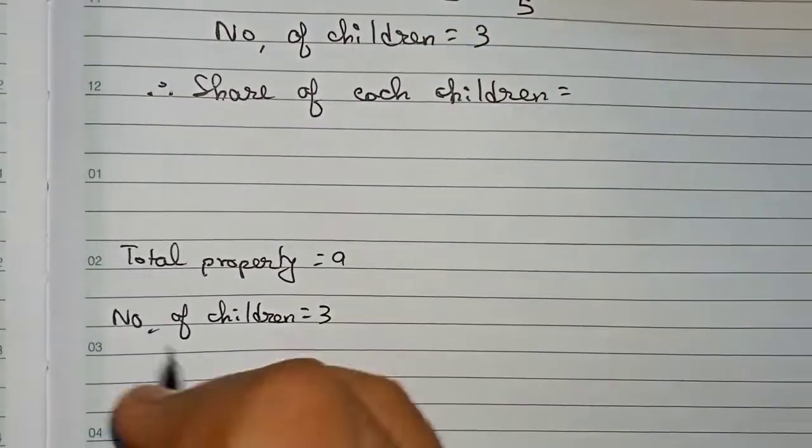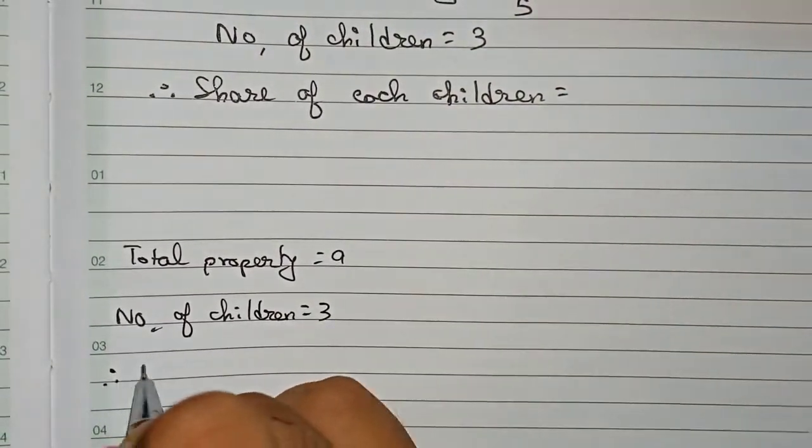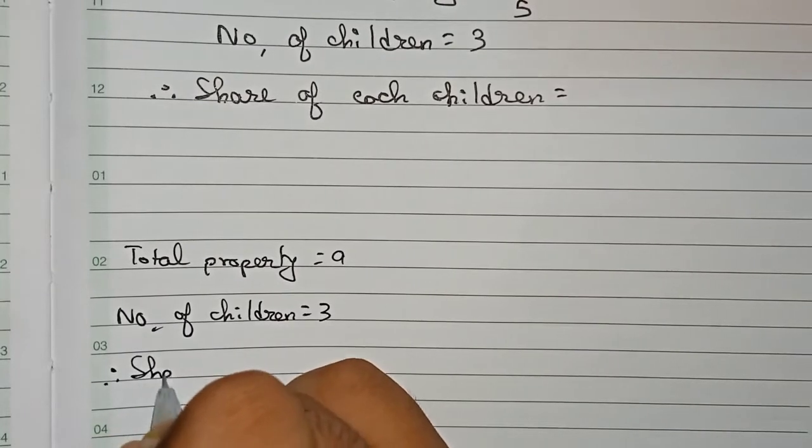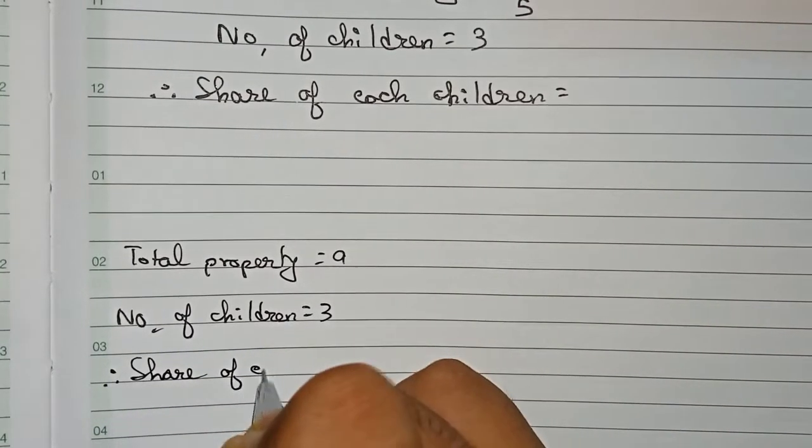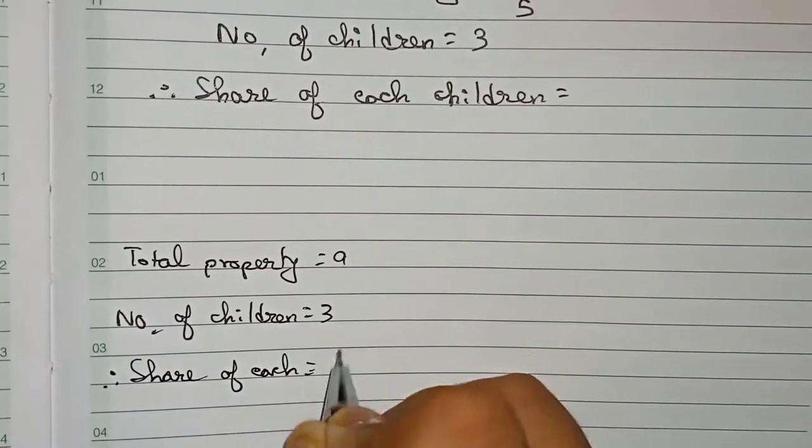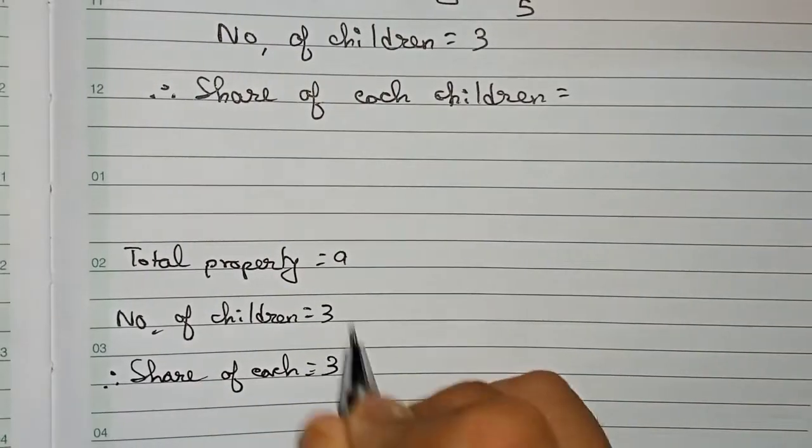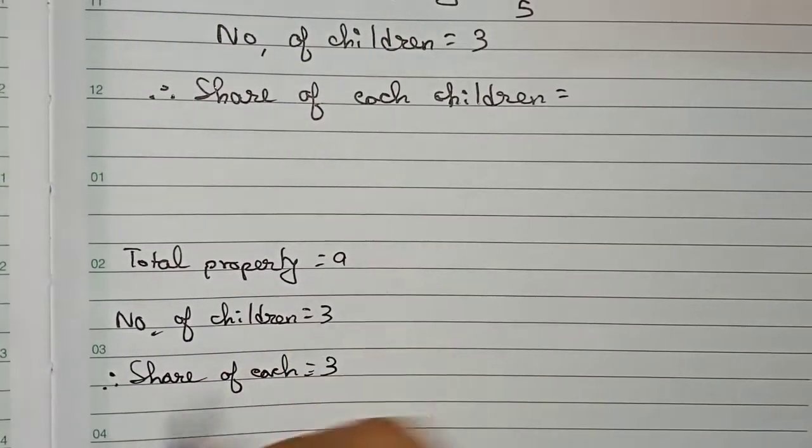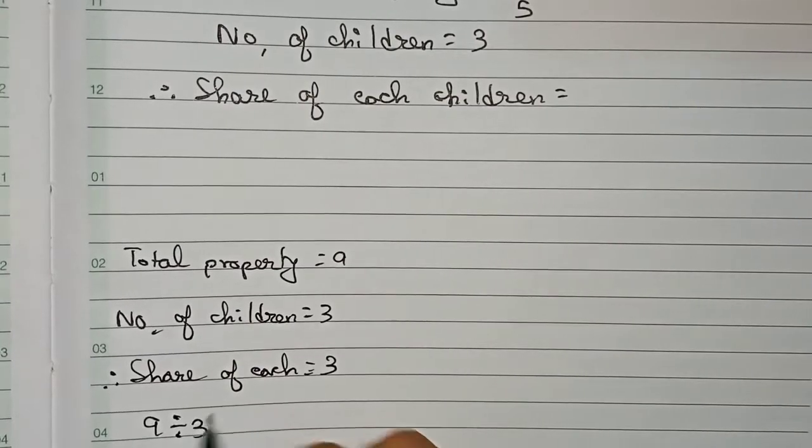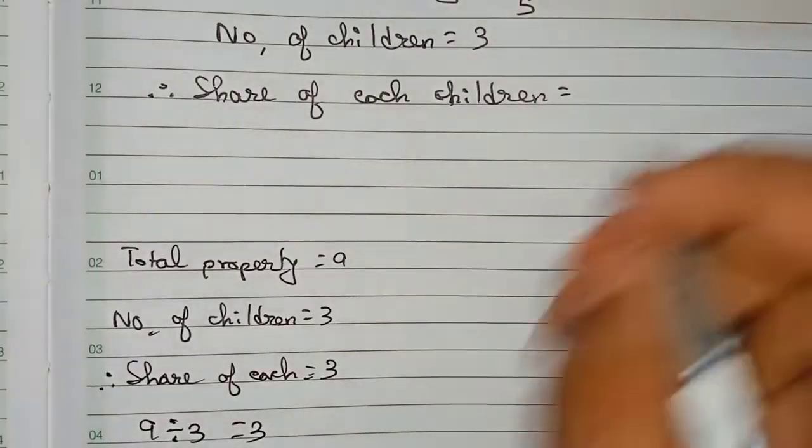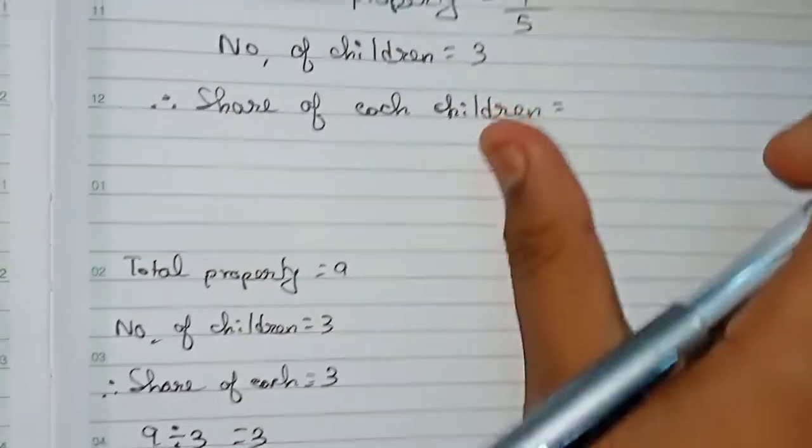If it is equally divided, therefore share of each child, we can easily understand, becomes three. How you get it? You just divide 9 by 3 and that is equal to 3. In the similar case,